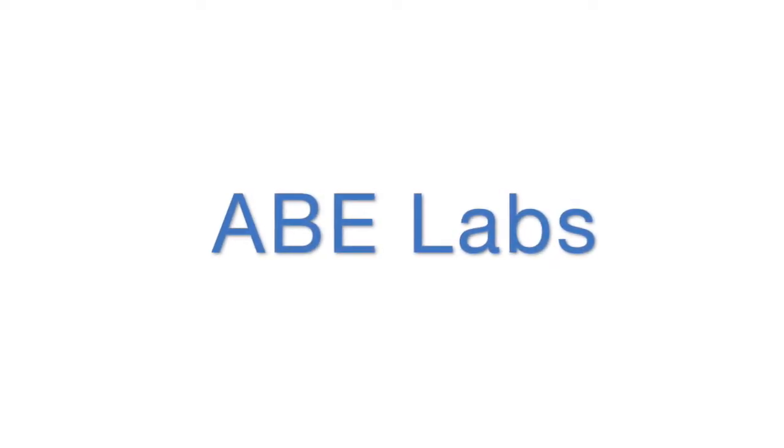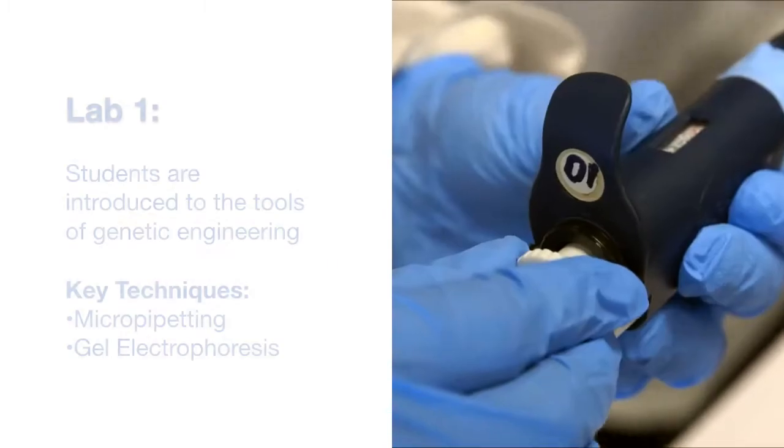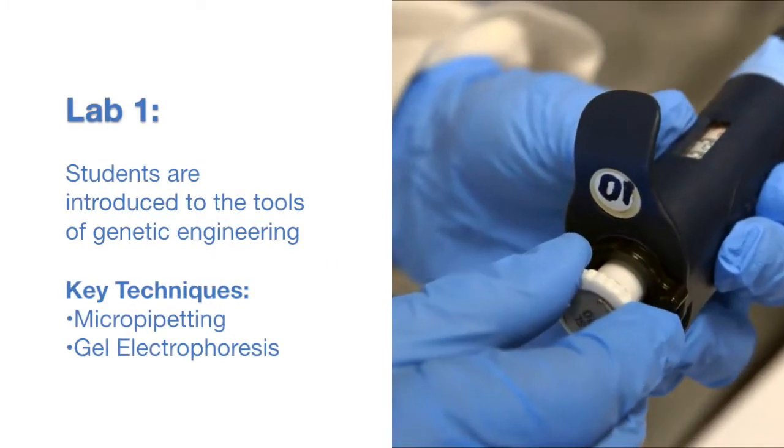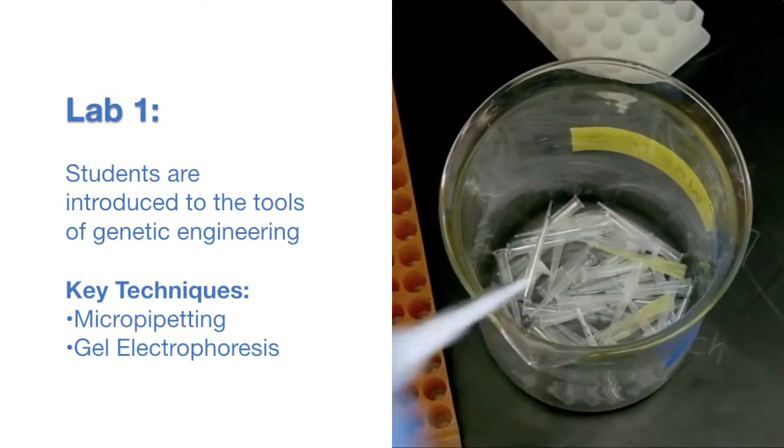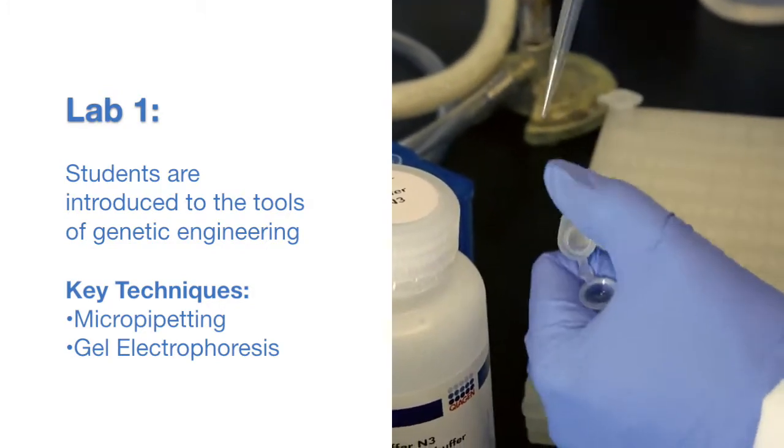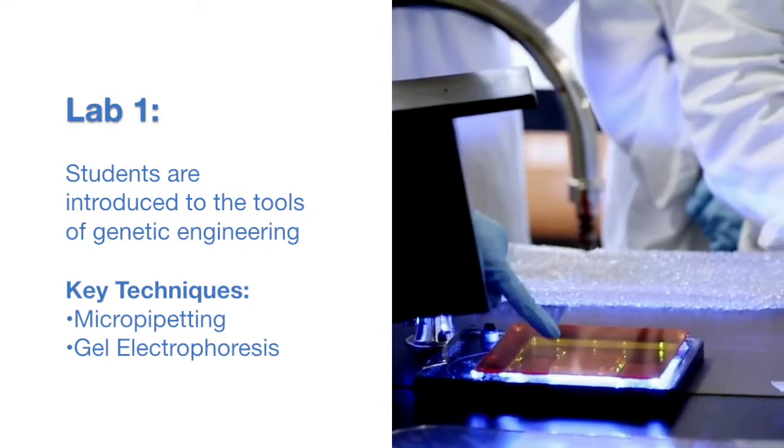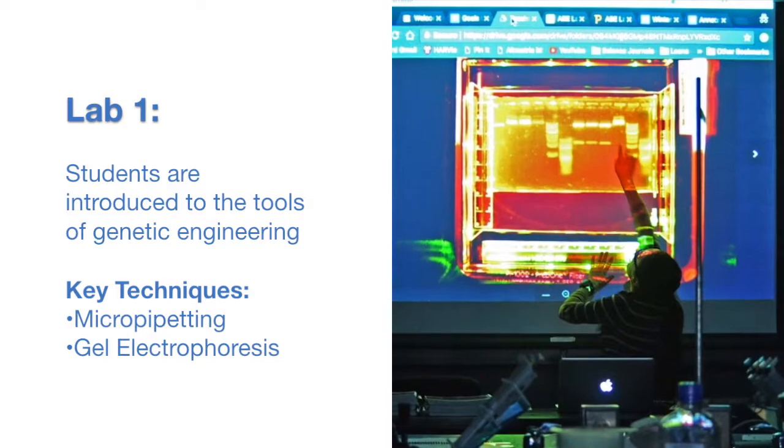The following is a snapshot of the six ABE labs. First, students are introduced to some tools used in genetic engineering. They become comfortable with the techniques of micropipetting and using gel electrophoresis to separate fragments of DNA.